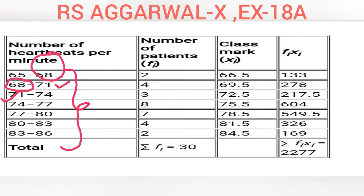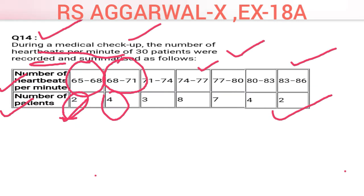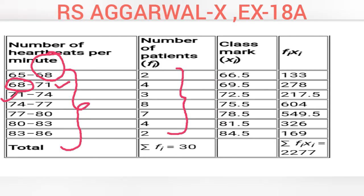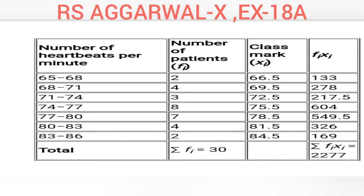The number of patients — which are the frequencies — have been noted here. We are building the table using the original question table. The classes and frequencies have been mentioned: 2, 4, 3, 8, 7, 4, 2. Now we need to calculate the class mark. Suppose we take the first class: 65 to 68.